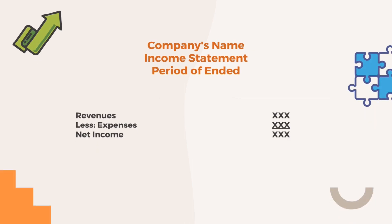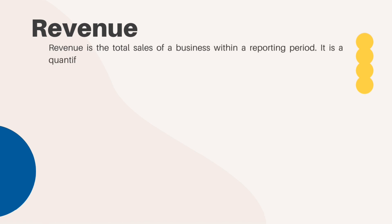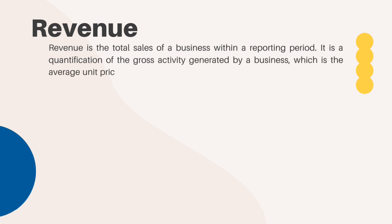Let's move on to the elements of the income statement. First, do not forget the heading: the company's name, followed by income statement, and the period of ending. The elements of the income statement follow the formula: revenues less expenses equals net income. Revenue is the total sales of a business within a reporting period. It is a quantification of the gross activity generated by a business, which is the average unit price charged to customers multiplied by the number of units sold.